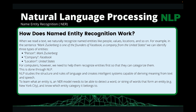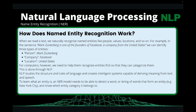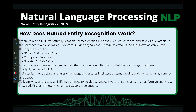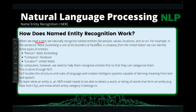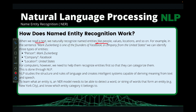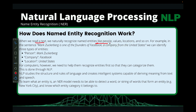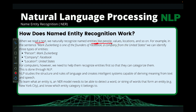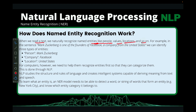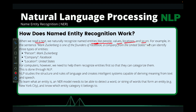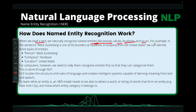Let's see how named entity recognition actually works. Normally when we read a text, we naturally recognize the entities in it. As humans, it's quite easy to recognize entities like people, values, location, and so on in our text or document.